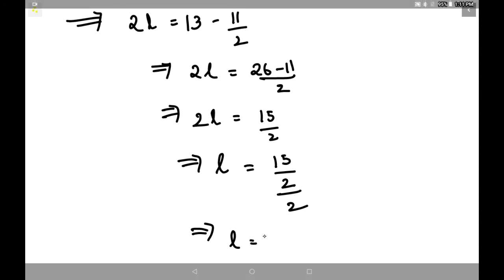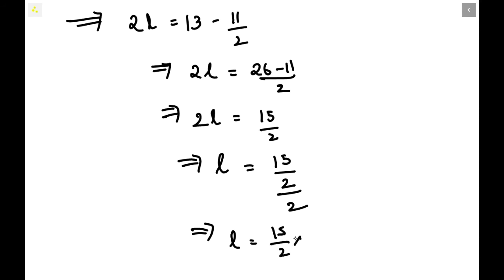So L will equal 15/2 × 1/2. If there is no denominator, that means the denominator is 1. L value will equal 15/2 × 1/2, which equals 15 × 1 = 15, and 2 × 2 = 4. So L value equals 15/4.